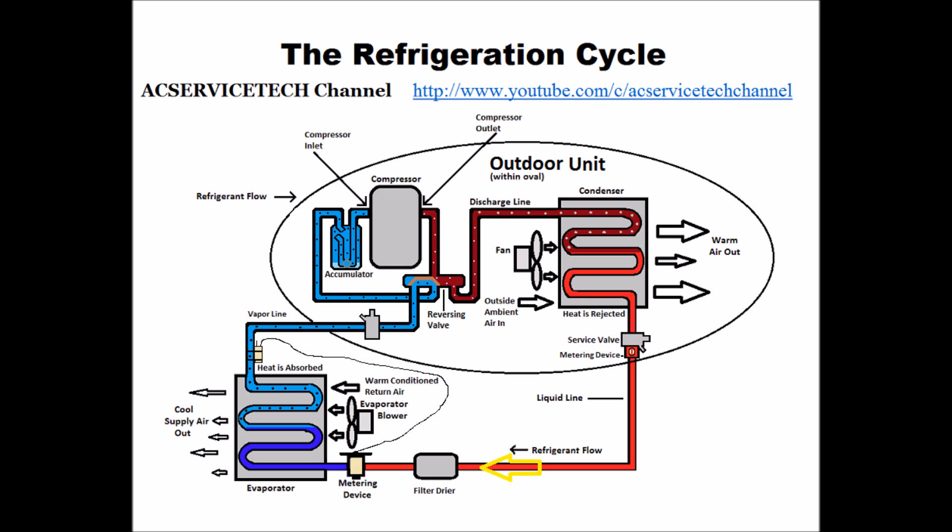It then goes through the filter dryer, where it collects any contaminants and any water vapor. The filter dryer's job is to mainly hold water vapor and it has a fixed capacity — you don't want water mixing with the refrigerant because it can turn into alcohol and acids. It continues through as a high pressure, high temperature liquid refrigerant until it hits the metering device.